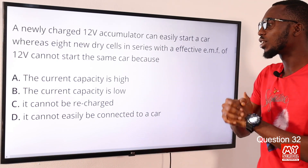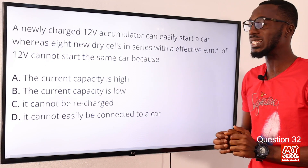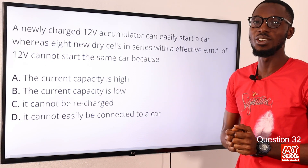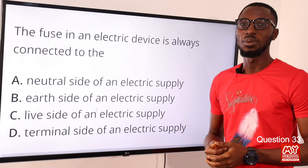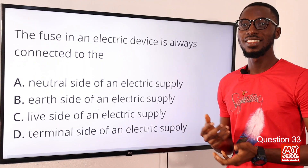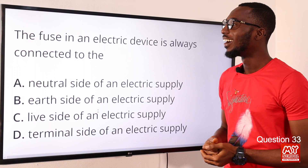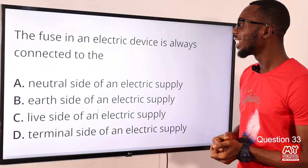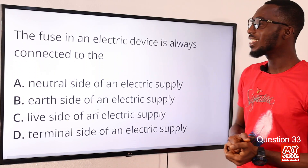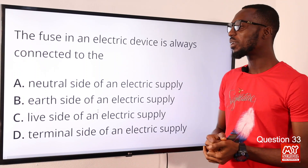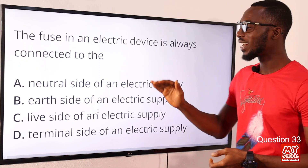So the correct option is option B — the current capacity is low.